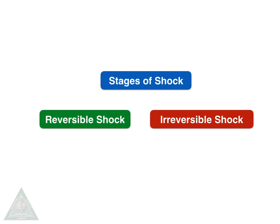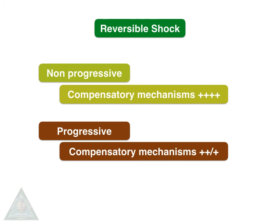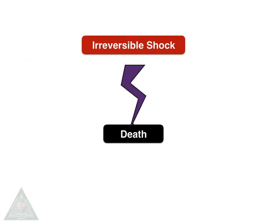Coming to the stages of shock, it is classified as reversible and irreversible. Reversible shock is further divided into non-progressive, when the compensatory mechanisms are very active, and progressive, when the compensatory mechanisms are reduced or absent. Irreversible shock usually results in death.